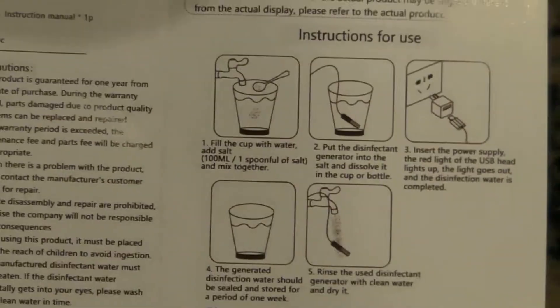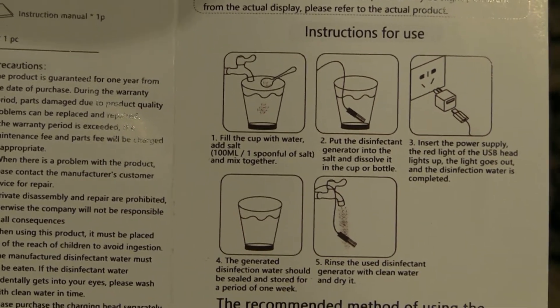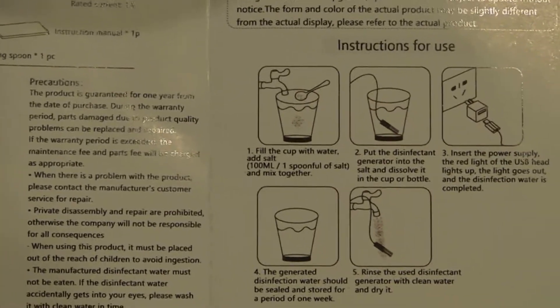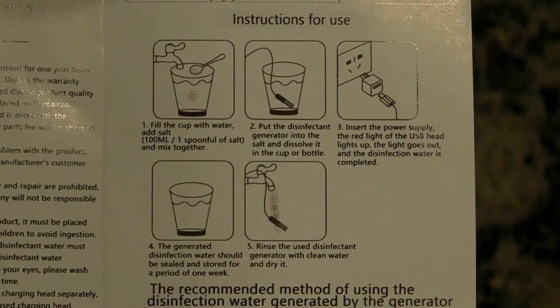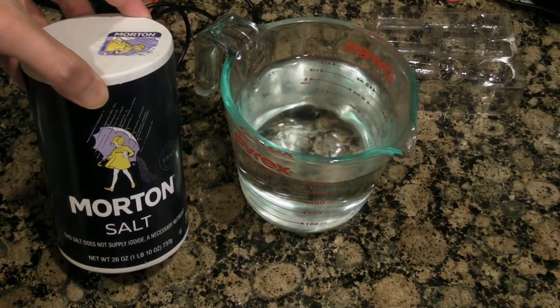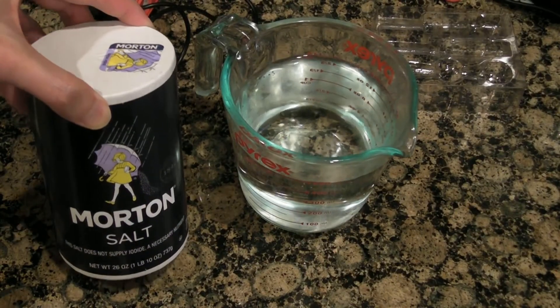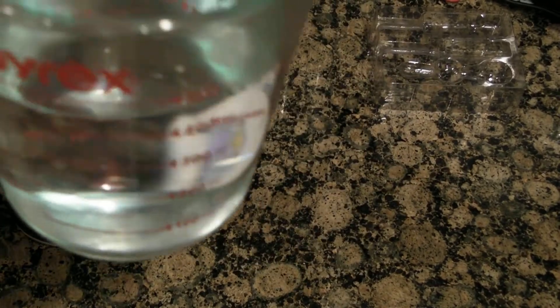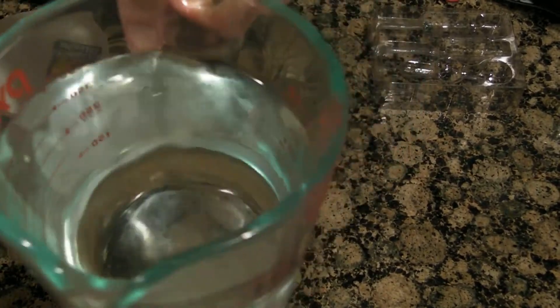So the instruction says to mix 100 ml of water with one spoonful of salt. So I'm going to make two cups of this disinfectant with two cups of water, plain tap water, which equals to 500 ml, same as two cups.